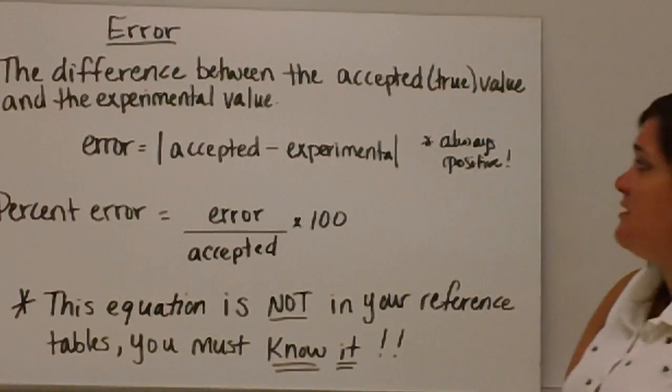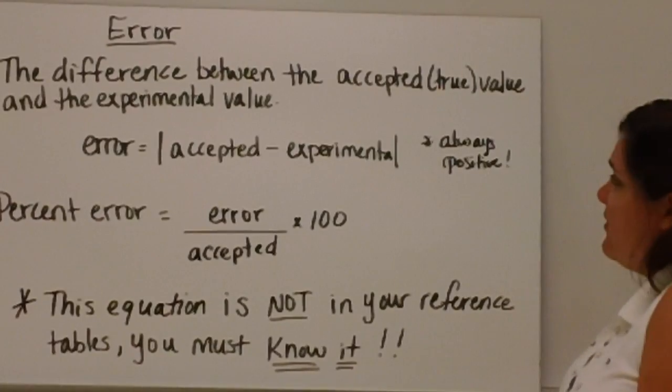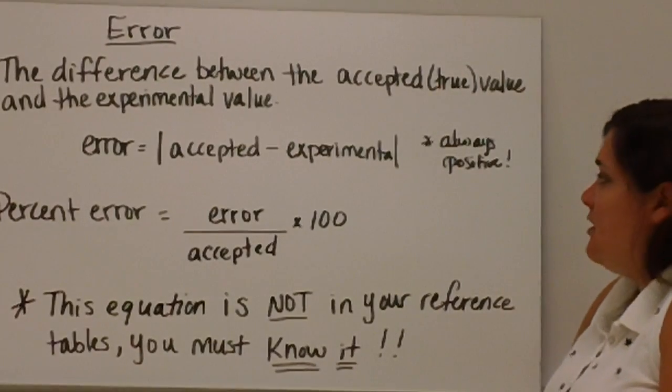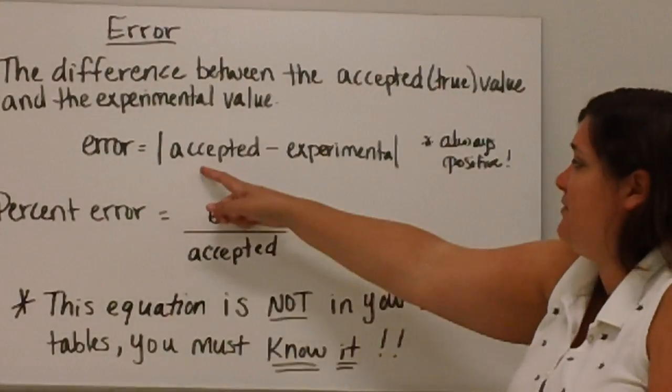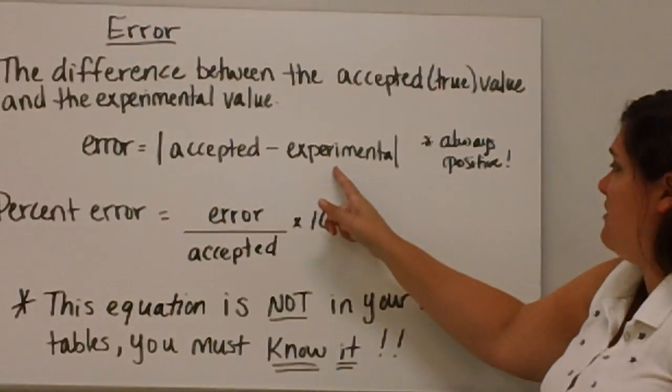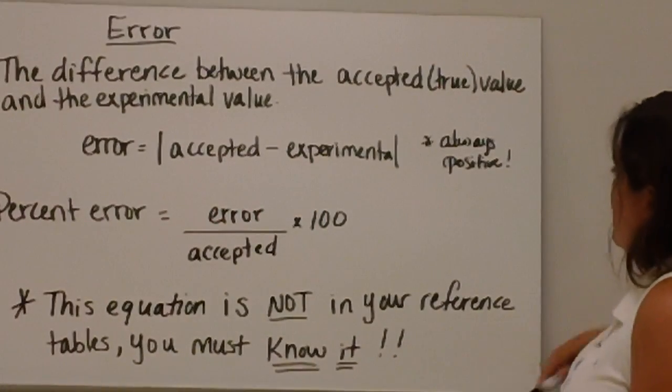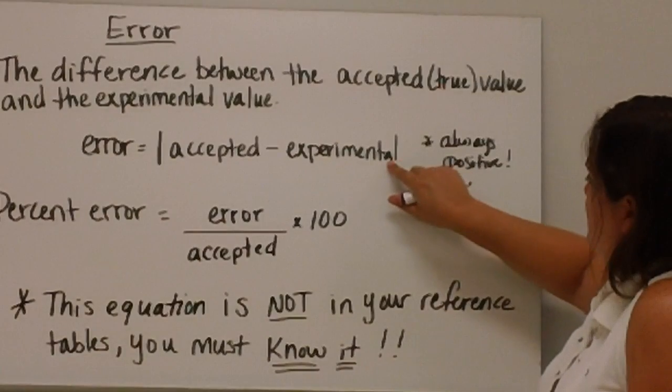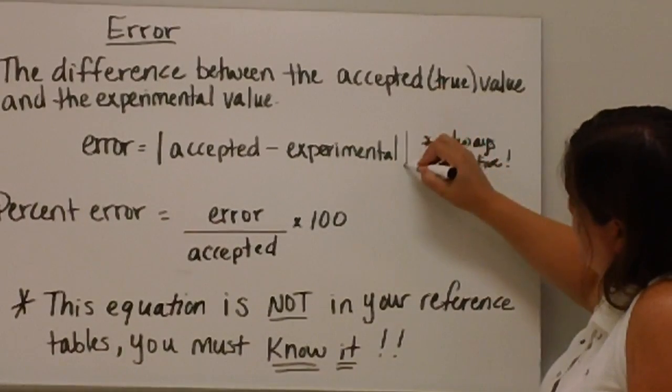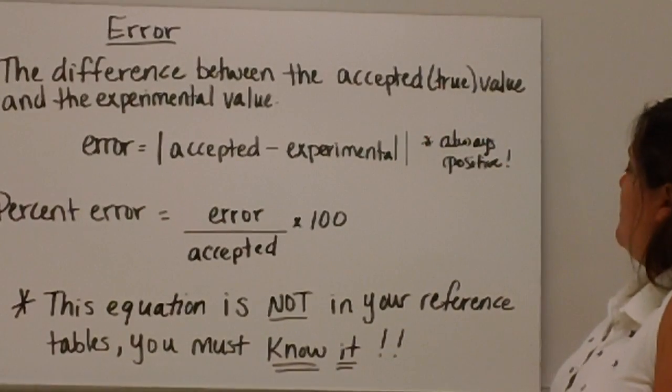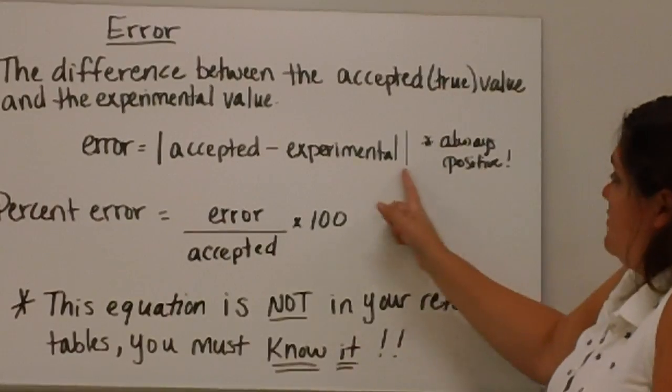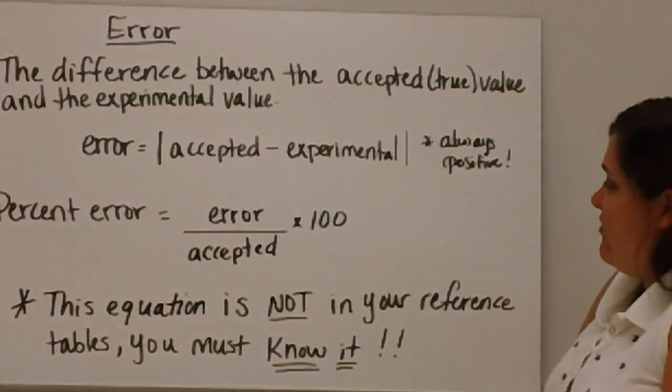Error is the difference between the accepted or true value and the experimental value. To calculate error, we take the absolute value of the accepted minus experimental values. This value is always positive because we've taken the absolute value of that.